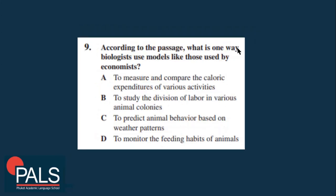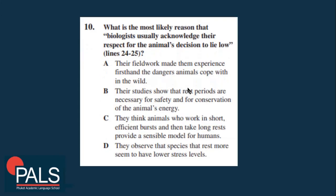Question nine: according to the passage, what is one way biologists use models like those used by economists? They use models to measure and compare the caloric expenditures of various activities — for example, how much calorie an animal will burn if it hunts, or if it runs in a hot and humid environment. They use those models to check that information and data.